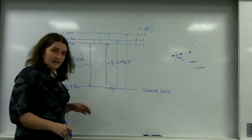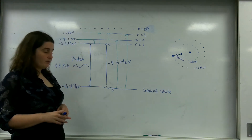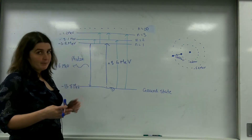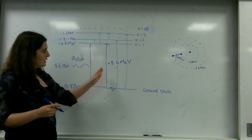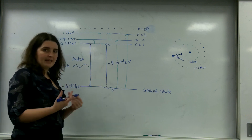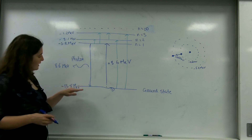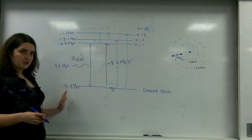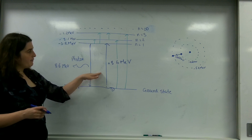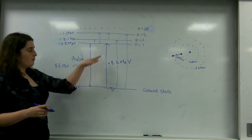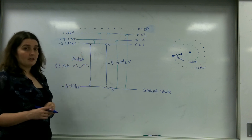Here is an energy level diagram of an element. I have labelled the transitions that can happen in this element, so it has very succinct energy levels that have certain values. This means that photons are emitted at certain values of energy.